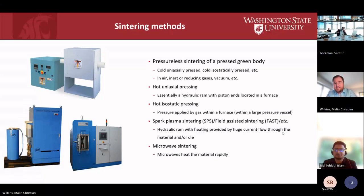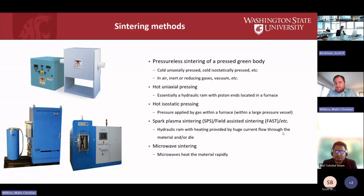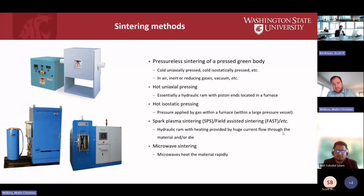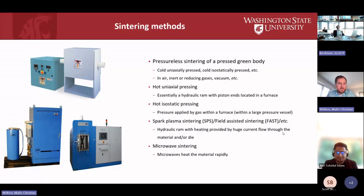Hot isostatic pressing applies pressure with a gas within a furnace inside a pressure vessel. SPS, sometimes called FAST — there are many different names for it — is essentially heating not with a furnace but by pushing a large amount of current through the material or sometimes the die. Microwave sintering is an up-and-coming, very fast method of sintering using heat and pressure.